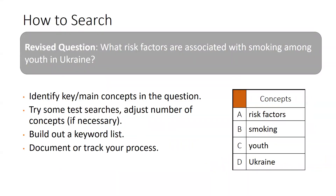Once you have your question, identify the main concepts. For this question, we have: risk factors, smoking, youth, and Ukraine. I often just make a list, then try some test searches like 'risk factors AND smoking AND youth AND Ukraine,' and adjust the number of concepts if necessary — it might be too specific or not specific enough. Then build out your keyword list and document or track your progress.